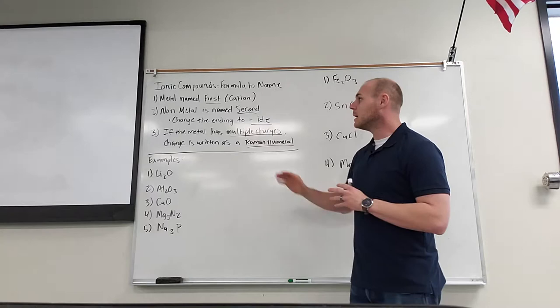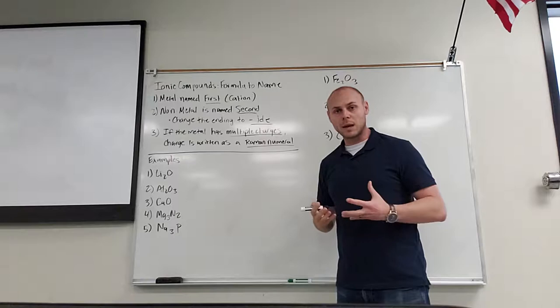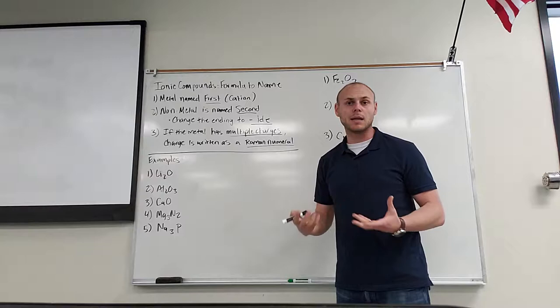Secondly, you name the non-metal which is the anion. For the anion you do have to change the ending to "-ide". So for example oxygen becomes oxide, nitrogen becomes nitride, sulfur becomes sulfide, phosphorus becomes phosphide, bromine becomes bromide, and so on and so forth. Let's go ahead and do a couple of examples.